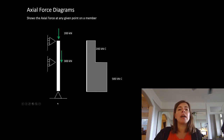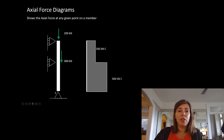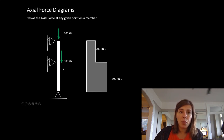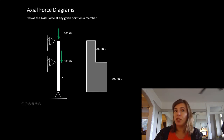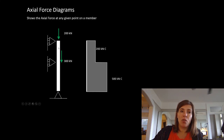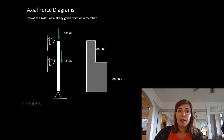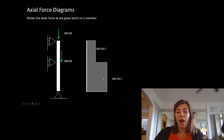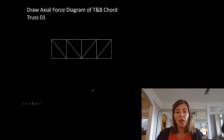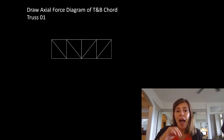If we had done method of sections and solved for reactions, we would have gotten 500 kilonewtons at the base. If we cut here and kept the bottom, we'd need to draw an internal force of 500. If we cut here and kept the top half, we'd find 200 plus 300 balanced by 500 kilonewtons. If we cut right here and kept the top, we'd need an internal force of 200. So method of sections would still work for this process — we're essentially drawing out a graphic of the internal forces we would have calculated.